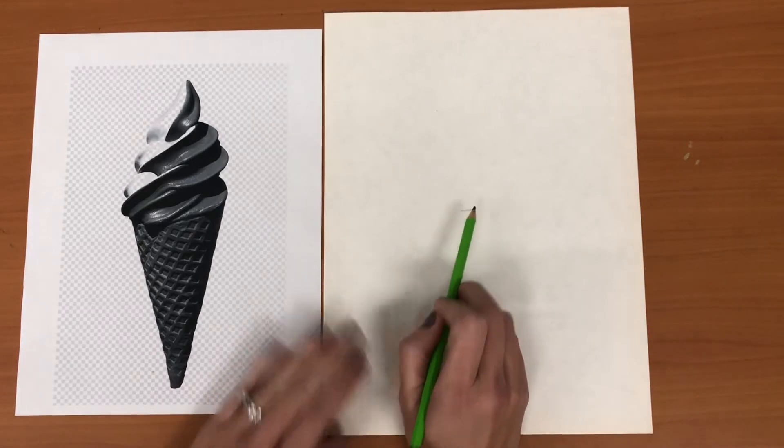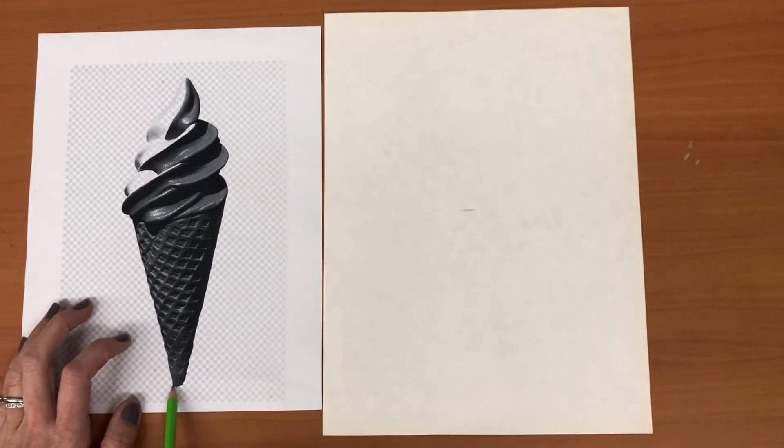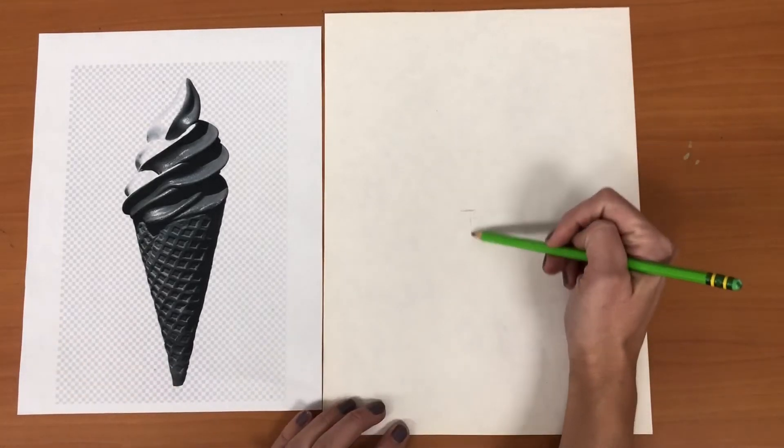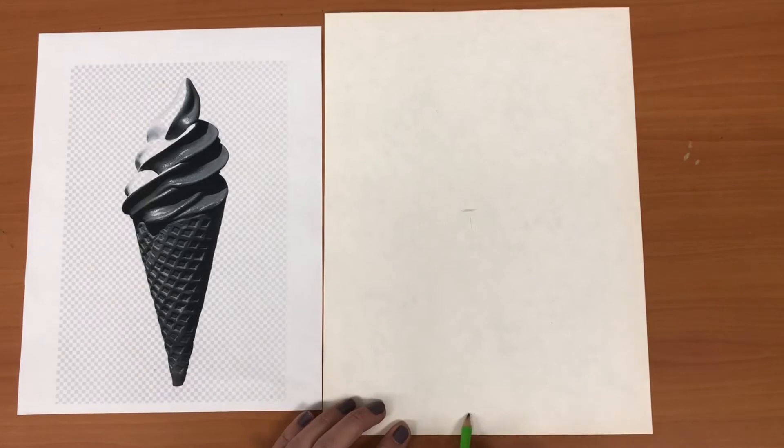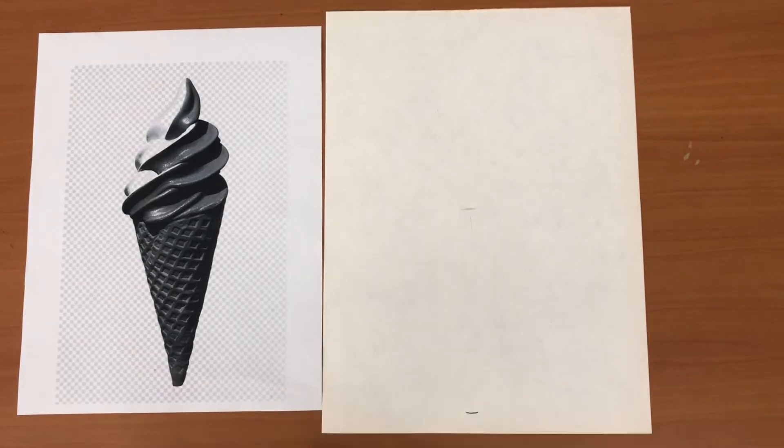Okay so now the first thing we're gonna do is work on our cone shape. You see our cone doesn't come to a point here it has a flat bottom so what I'm gonna do is I'm gonna come down from the middle and I'm gonna draw a little flat line right there.